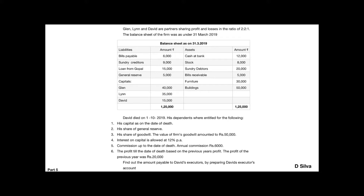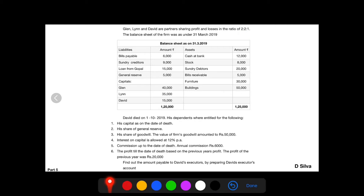Hello students, let's work out this problem under death of a partner. Glenn, Lynn and David are partners sharing profits and losses in the ratio of 2 is to 2 is to 1. The balance sheet of the firm is being given to us. David died on 1st October 2019. His dependents were entitled for the following.